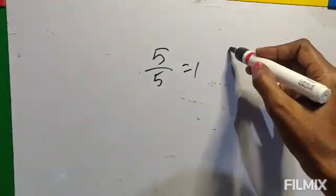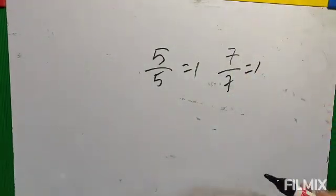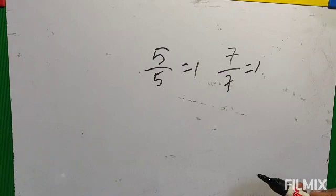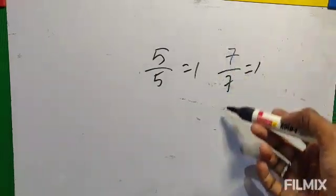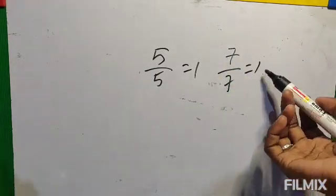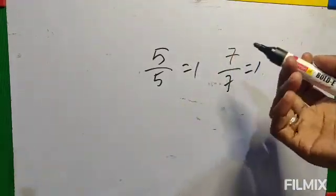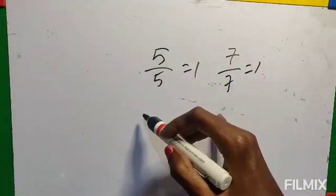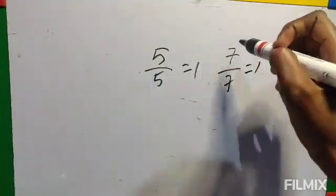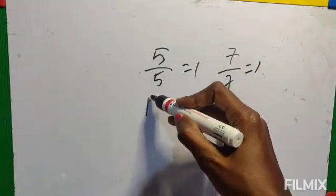If it is 5 by 5, then it equals 1. If it is 7 by 7, it equals 1. When the numerator and the denominator are the same, the fraction equals the whole number 1. So if 1 is given, you can write it as 7 by 7 or 5 by 5. According to the sum you have to look at which to use.